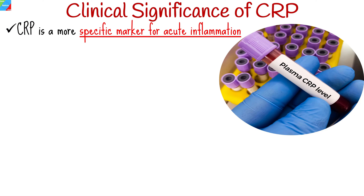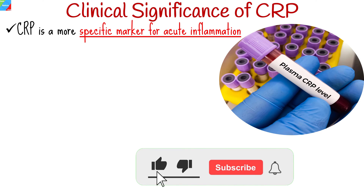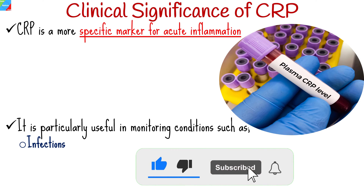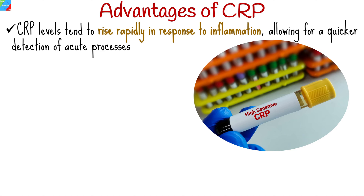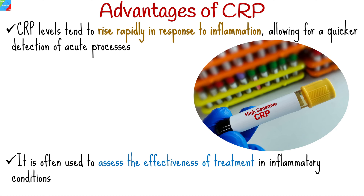CRP is a more specific marker for acute inflammation. It is particularly useful in monitoring conditions such as infections, tissue injury, and cardiovascular diseases. CRP levels tend to rise rapidly in response to inflammation, allowing for quicker detection of acute processes, and it is often used to assess the effectiveness of treatment in inflammatory conditions.